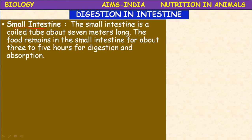Chyme enters into the small intestine. The small intestine is a coiled tube about seven meters long. The food remains in the small intestine for about three to five hours for digestion and absorption. This means the complete remaining process of digestion takes place in the small intestine.